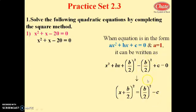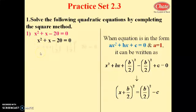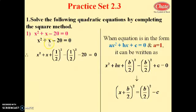So the formula becomes: (x + b/2)² = (b/2)² - c. Now we apply this to the example x² + x - 20 = 0. Here b = 1, so we write: x² + x + (1/2)² - (1/2)² - 20 = 0.